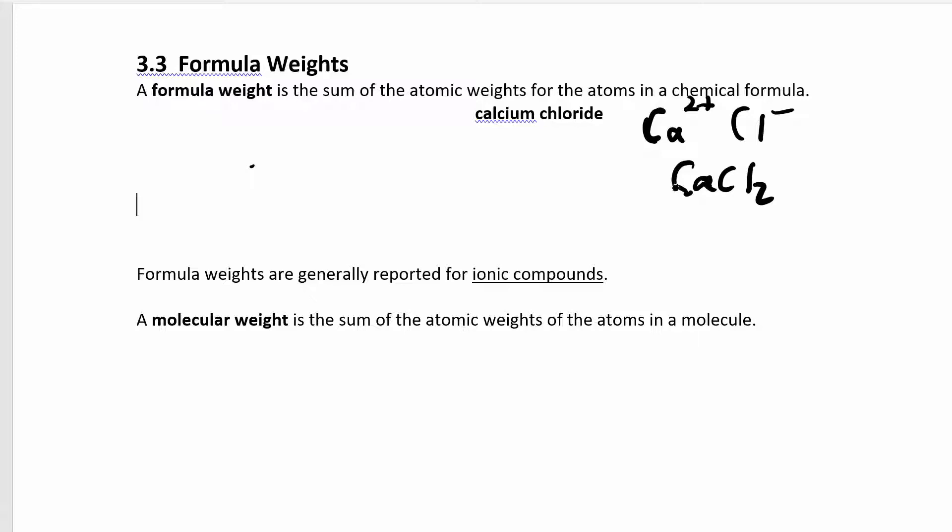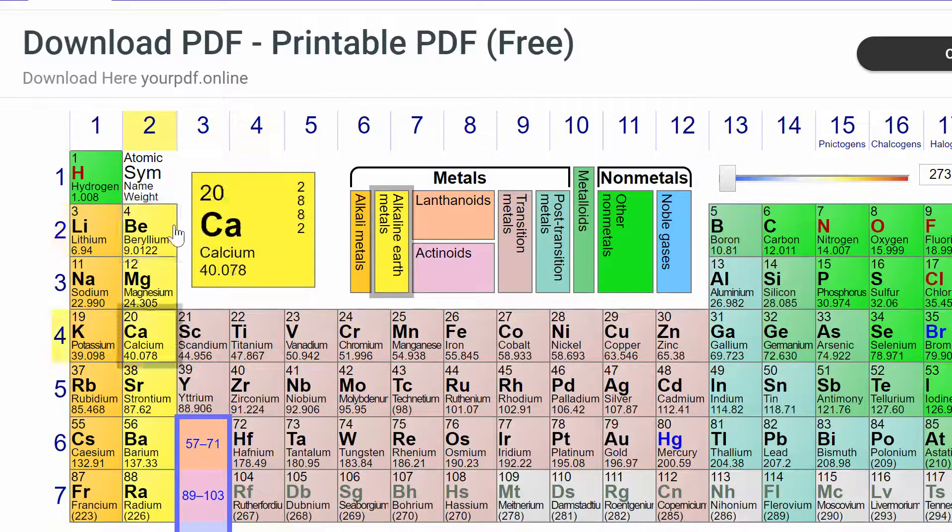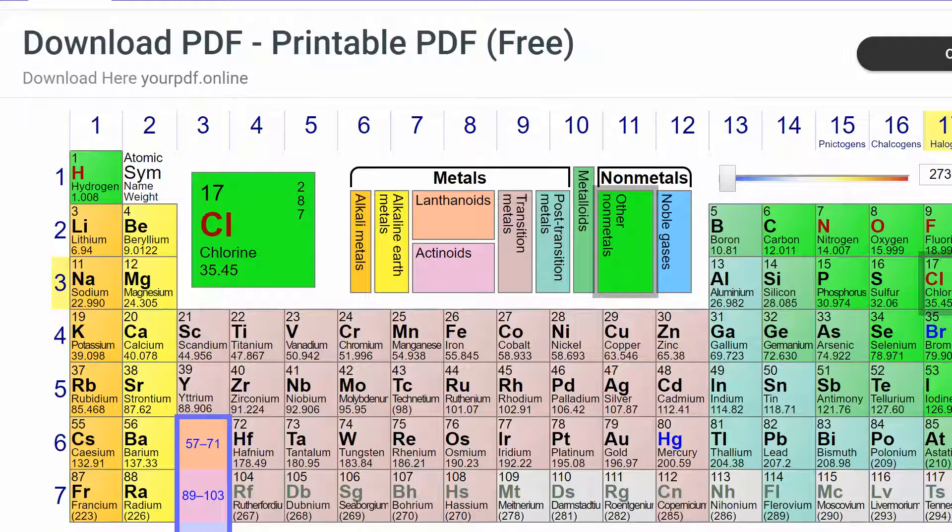You're going to look this up in the periodic table. This is an ionic compound. I have two chloride ions and one calcium ion. If you can't remember where we got those charges from, calcium is in group 2 so it has a +2 charge, and chloride is over here so it's -1.